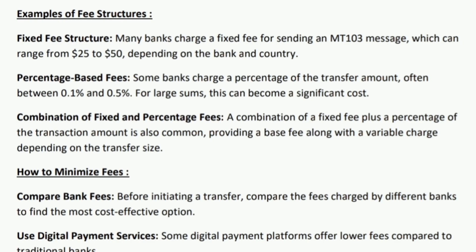Now let's look at some examples of fee structures. Fixed fee structure: many banks charge a fixed fee for sending an MT103 message, which can range from USD 25 to USD 50 depending on the bank and country. Percentage-based fees: some banks charge a percentage of the transfer amount, often between 0.1% and 0.5%; for large sums these can become a significant cost. Combination fees: a combination of a fixed fee plus a percentage of the transaction amount is also common, providing a base fee along with variable charges depending on the transfer size.